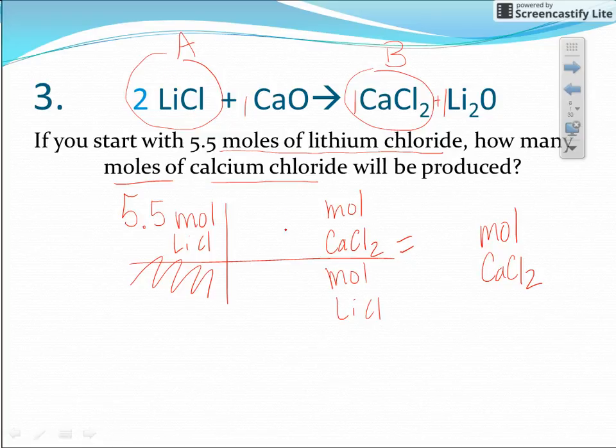Again, these numbers come straight from the balanced equation. So CaCl2 has a 1 in front of it, the 1 goes there. The lithium chloride has a 2 as its coefficient, meaning it takes two molecules of lithium chloride to make one molecule or one mole of calcium chloride. So here we're dividing by two.